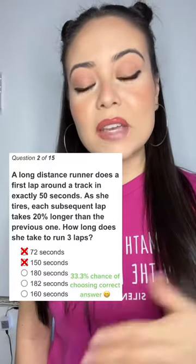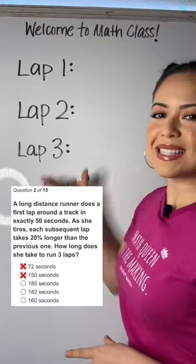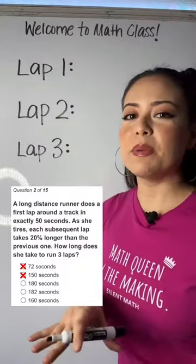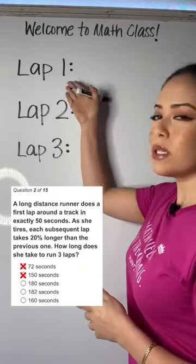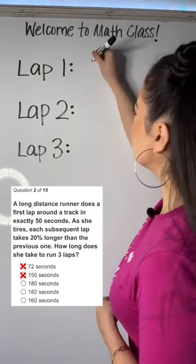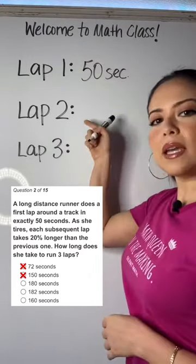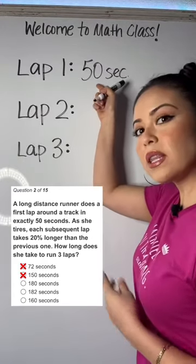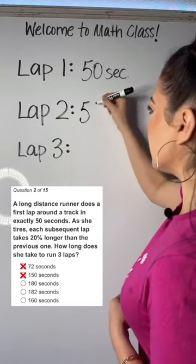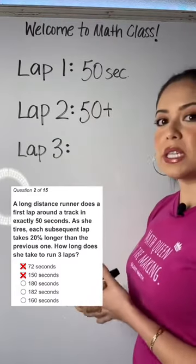Now you at least have a 33.3% chance of getting this right if you take an educated guess. But now let's solve. They already told us that the first lap took 50 seconds, so we put 50 seconds. Now the second lap is going to be 20% longer than this, so we can write 50 and add what 20% of 50 is.